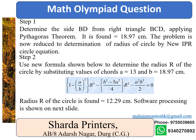Step 2: Use the new formula shown below to determine the radius R of the circle by substituting values of chords A equal to 13 and B equal to 18.97 cm. The radius R of the circle is found to be equal to 12.29 cm.